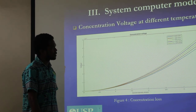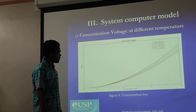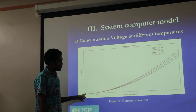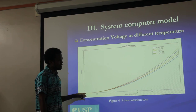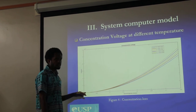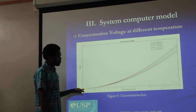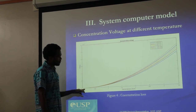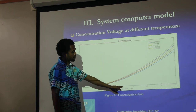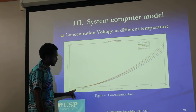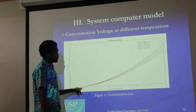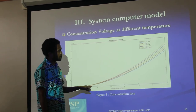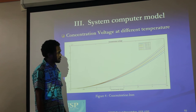Another type of loss is the concentration loss. This loss usually occurs at a high current density, as we can see from the graph. As the value of current density increases, the concentration loss of the model increases exponentially with the current density.